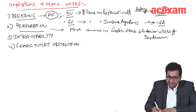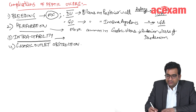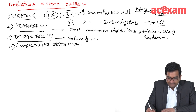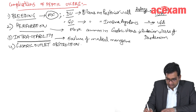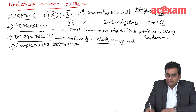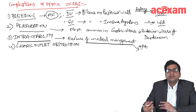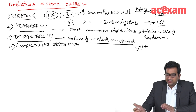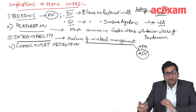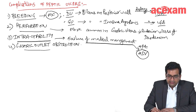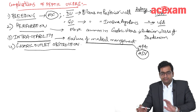The next complication is intractability. Intractability is failure of medical management. If there is failure of medical management, the treatment for an intractable or non-healing chronic duodenal ulcer is HSV — highly selective vagotomy.